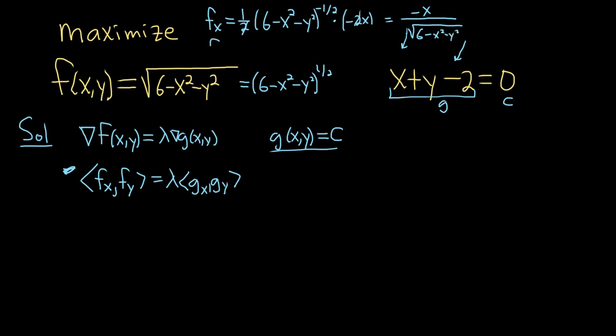You can do the same thing with fy. It's going to be very similar. So it's 1 half, 6 minus x squared minus y squared, and then we get negative 1 half times the derivative of the inside. Except this time, all the stuff with x and that number, it's all 0. So we just get negative 2y. So it's the same thing, the 2's cancel. So we get negative y over 6 minus x squared minus y squared.